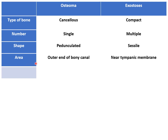The area involved in osteoma is the outer end of the bony canal, in the area of the tympanomastoid and tympanosquamous suture line. While exostosis forms near the tympanic membrane, i.e. the inner parts of the bony canal.